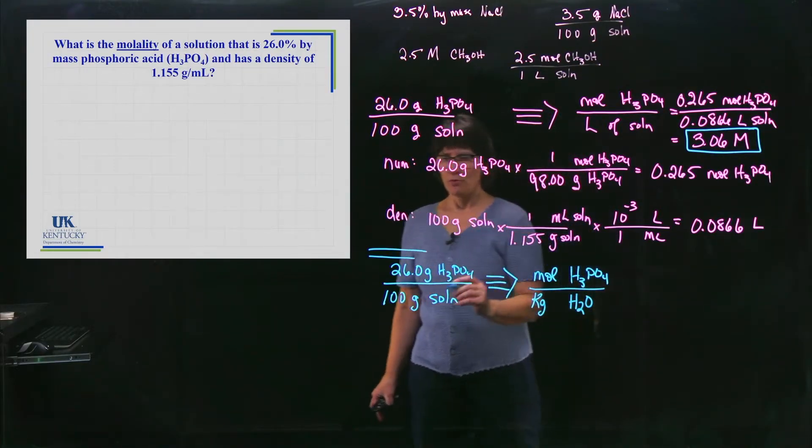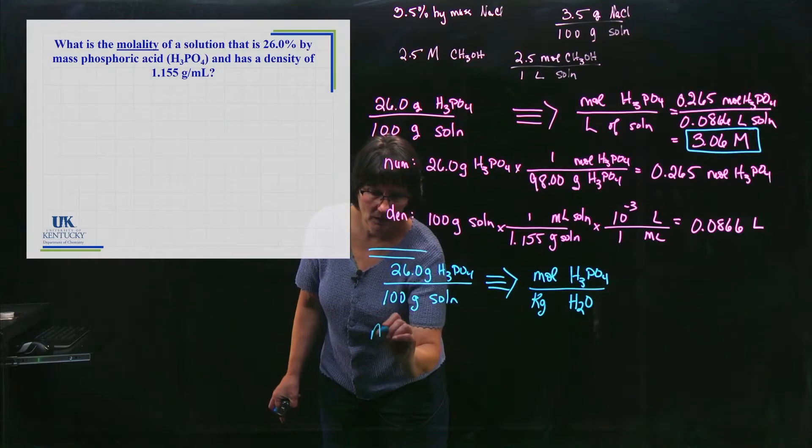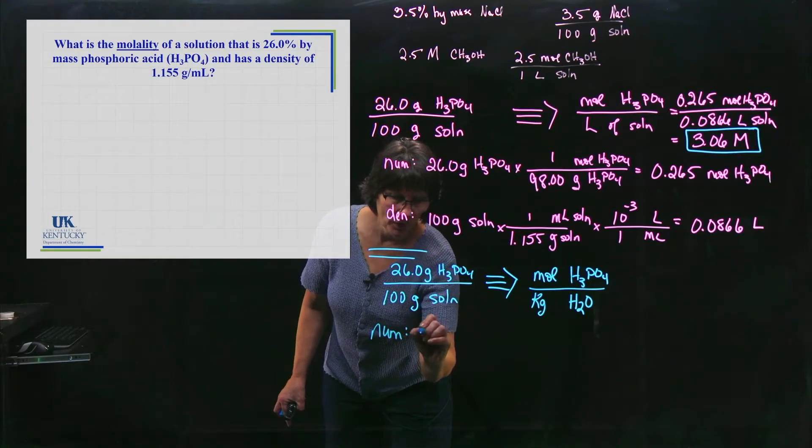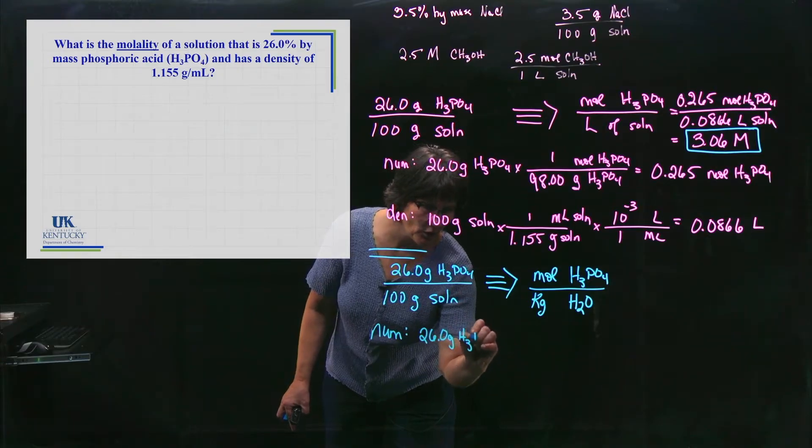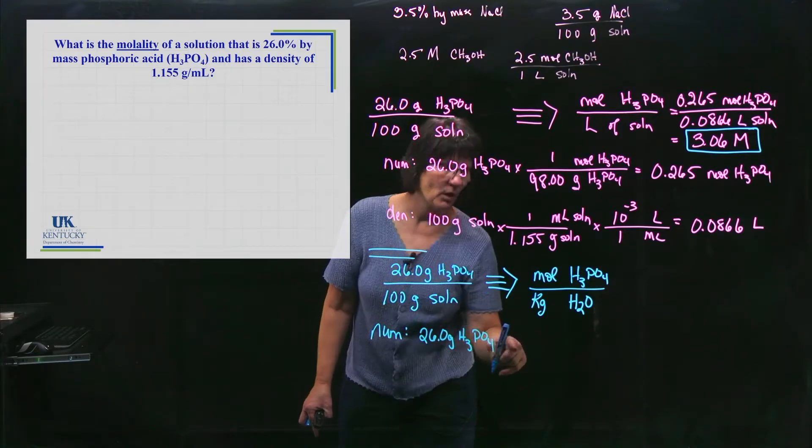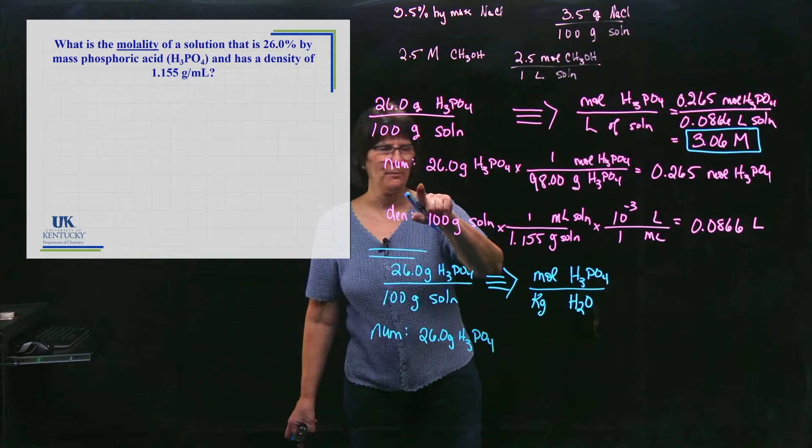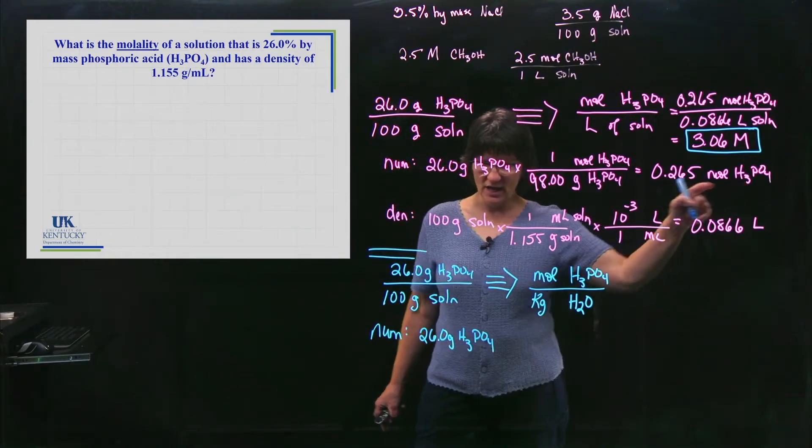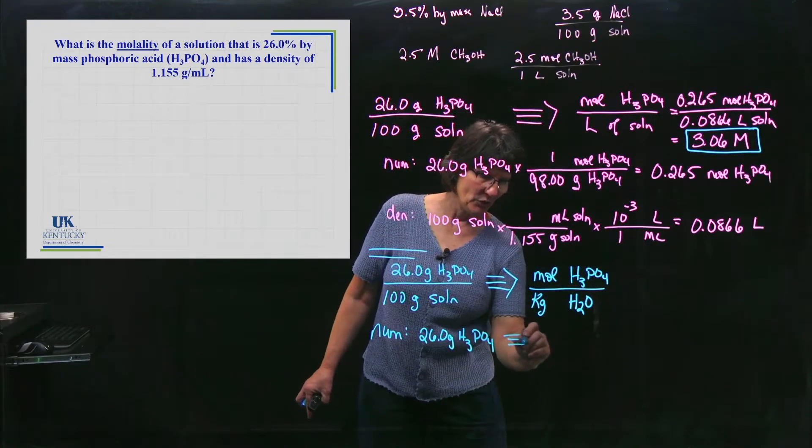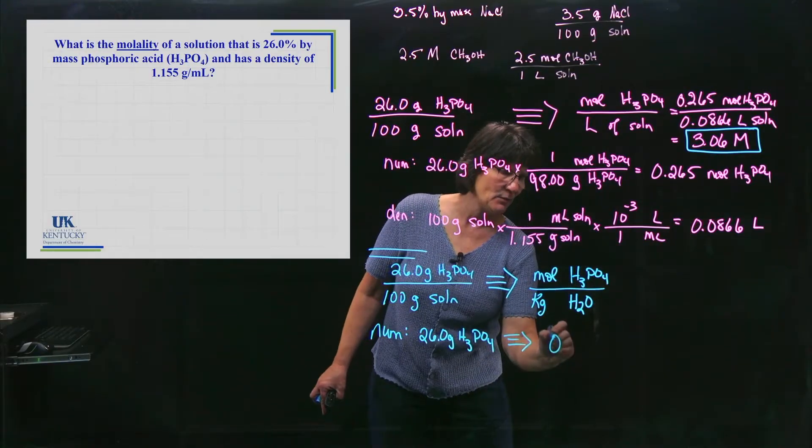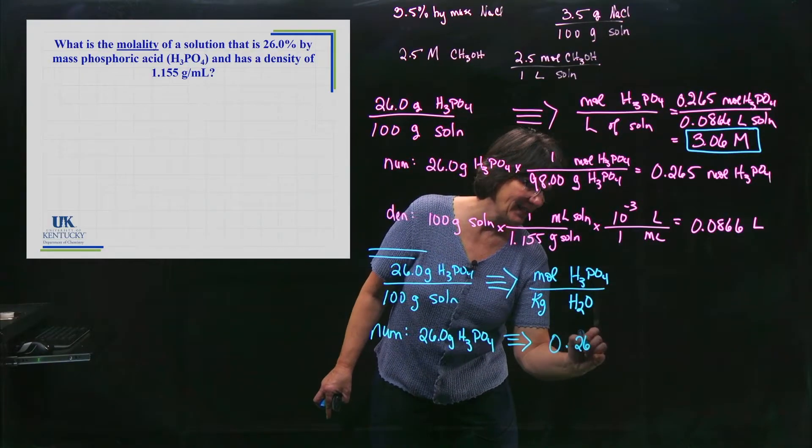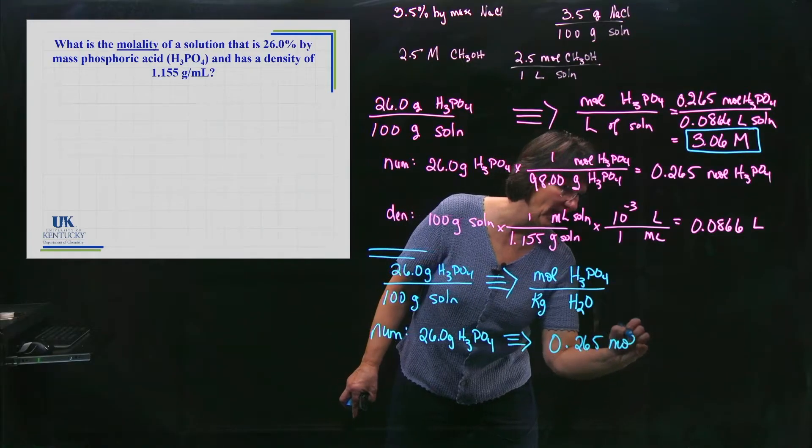So numerator. The numerator, we're going to take the 26 grams of H3PO4 and convert it to moles. Now I did do that already up here, so I'm not going to waste your time by doing it again.